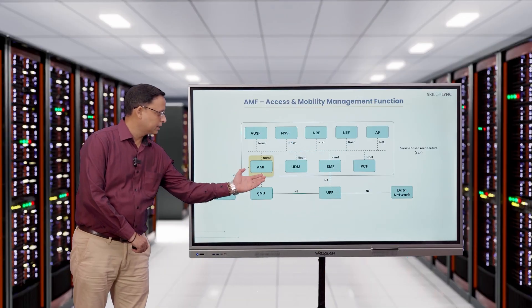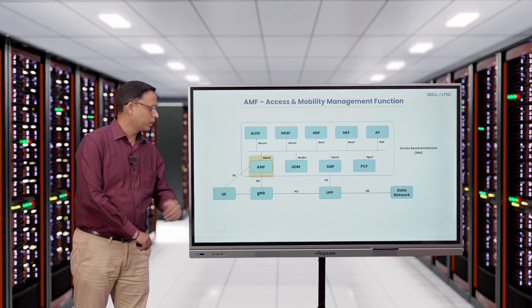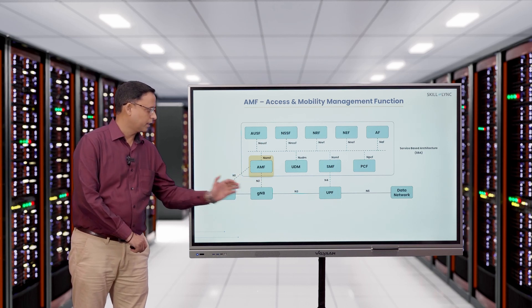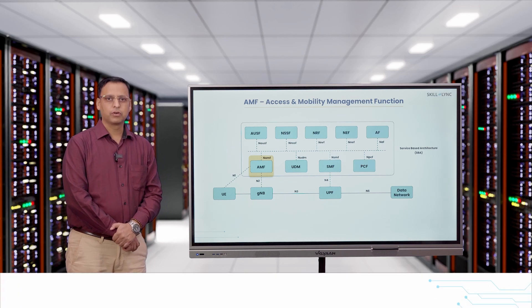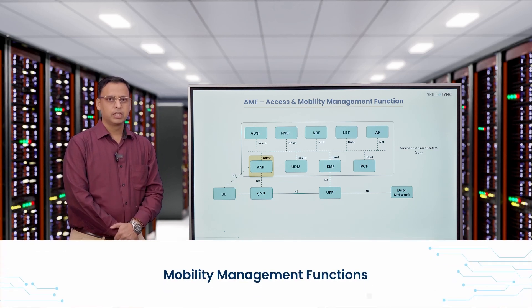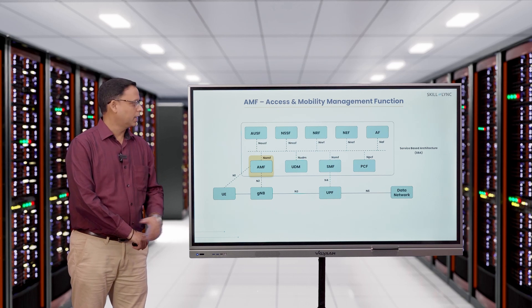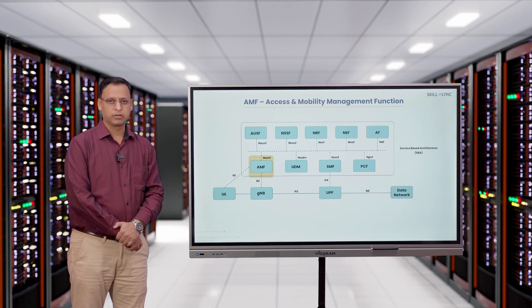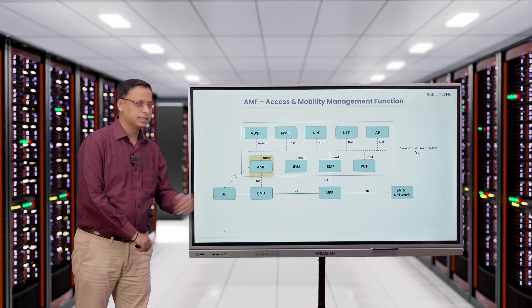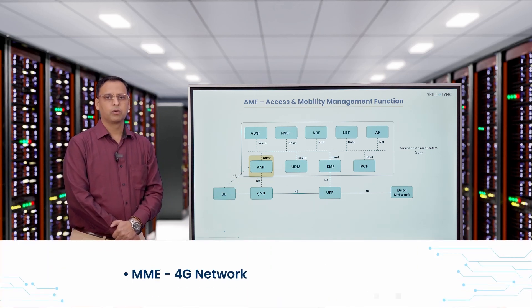AMF, or Access and Mobility Management Function, is the entry point for the core network from the radio side. AMF is typically responsible for all the mobility management functions. It also supports NAS signaling and provides connectivity towards the other core network components. AMF is similar to the MME of the 4G network, or the VLR of 2G and 3G networks.